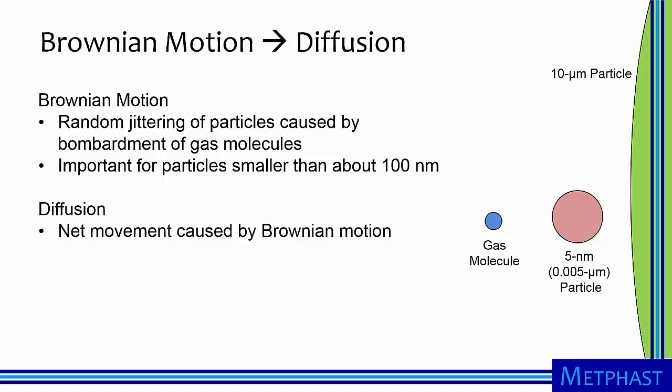Now we will consider Brownian motion, which leads to diffusion. So far we've been discussing large particles like the green 10 micrometer particle shown on the right-hand side of the slide. Very different forces are important for small particles that approach the size of gas molecules, like the red 5 nanometer particle shown in the slide. These particles randomly jitter because of the bombardment of gas molecules. This movement is called Brownian motion and is important for particles smaller than about 100 nanometers.